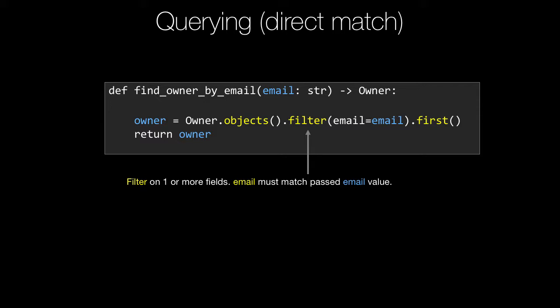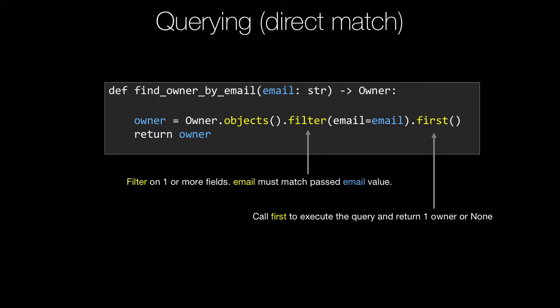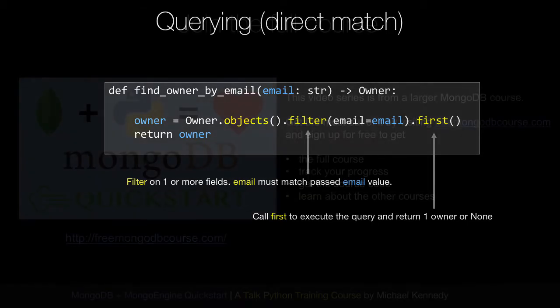This would return potentially a bunch of owners, but we don't want a bunch of owners — we want the one that matches this email. So we can say .first, and it'll give us the first item to match. If there's no match, we get None back. We don't get a crash or anything like that.